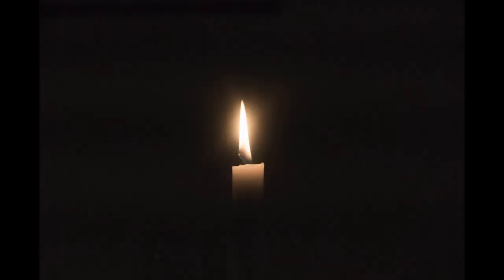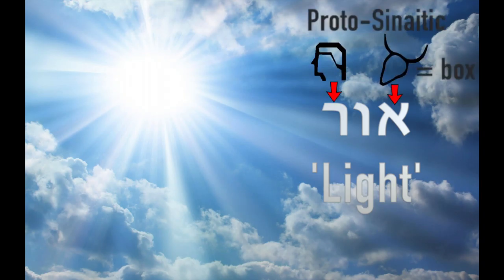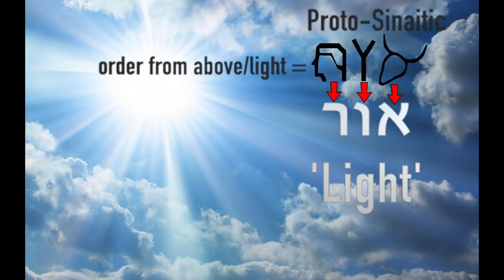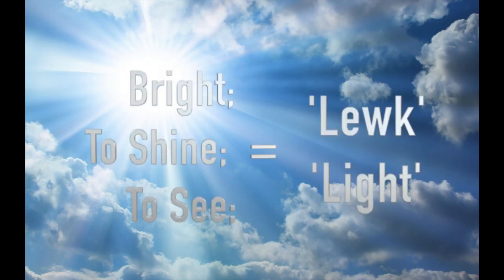Since light came before language, it is understandable that when language came along, one of the earliest words would involve that bright shining white light that we all see. There are many old words which describe light in many different ways, like the Hebrew word 'or' which describes order. One old version of the word light is the Proto-Indo-European word 'luit', which means bright, to shine, and to see.